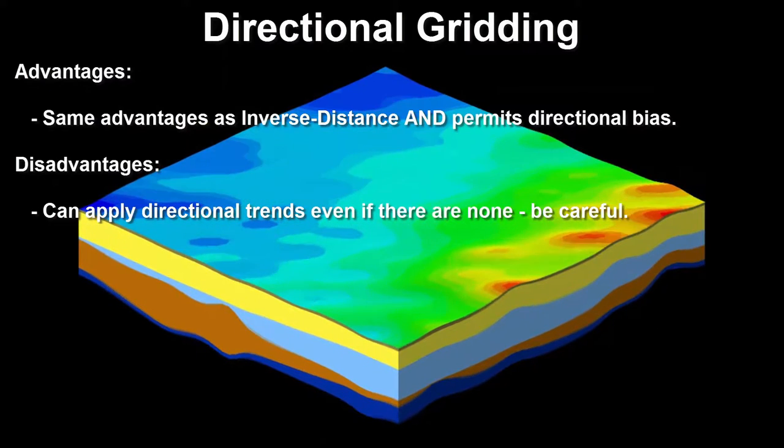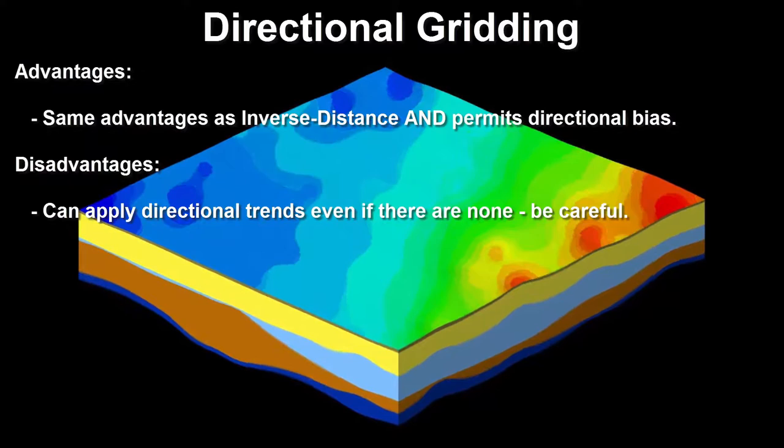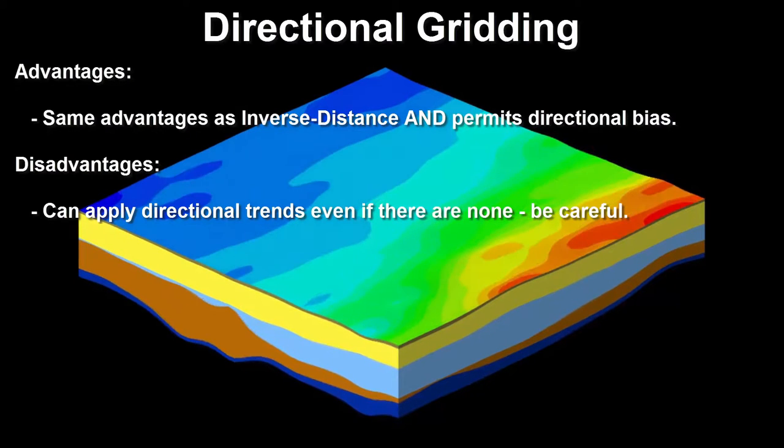Directional gridding has the same advantages as inverse distance, but it also permits directional bias.